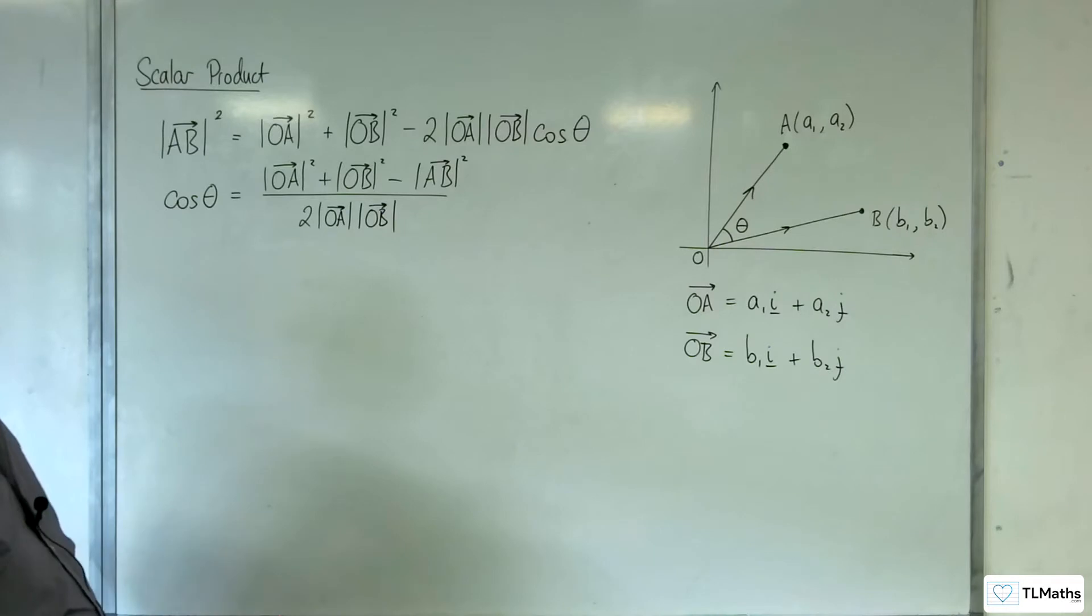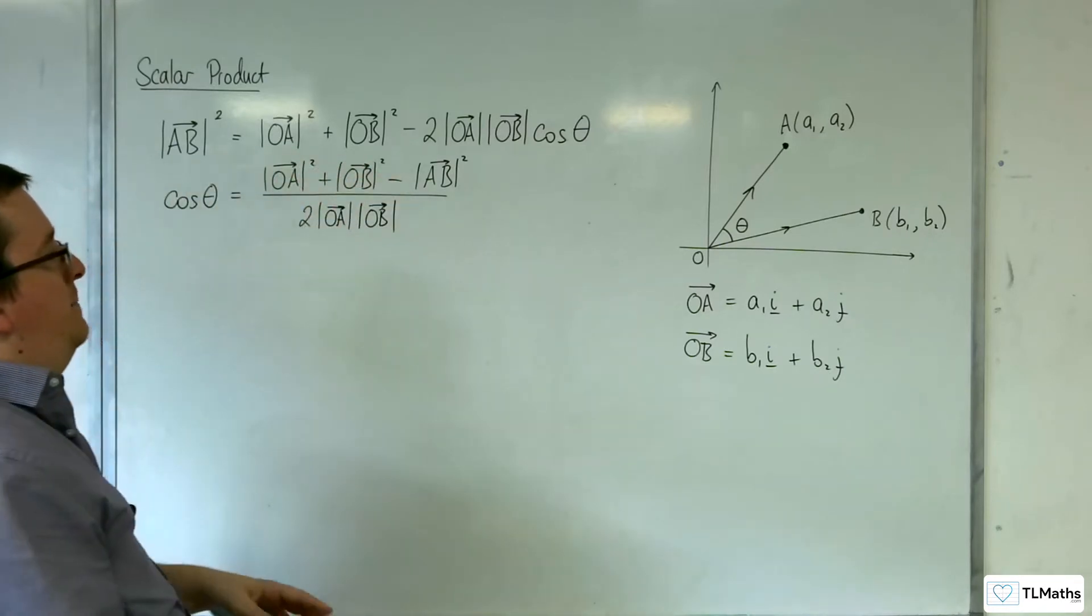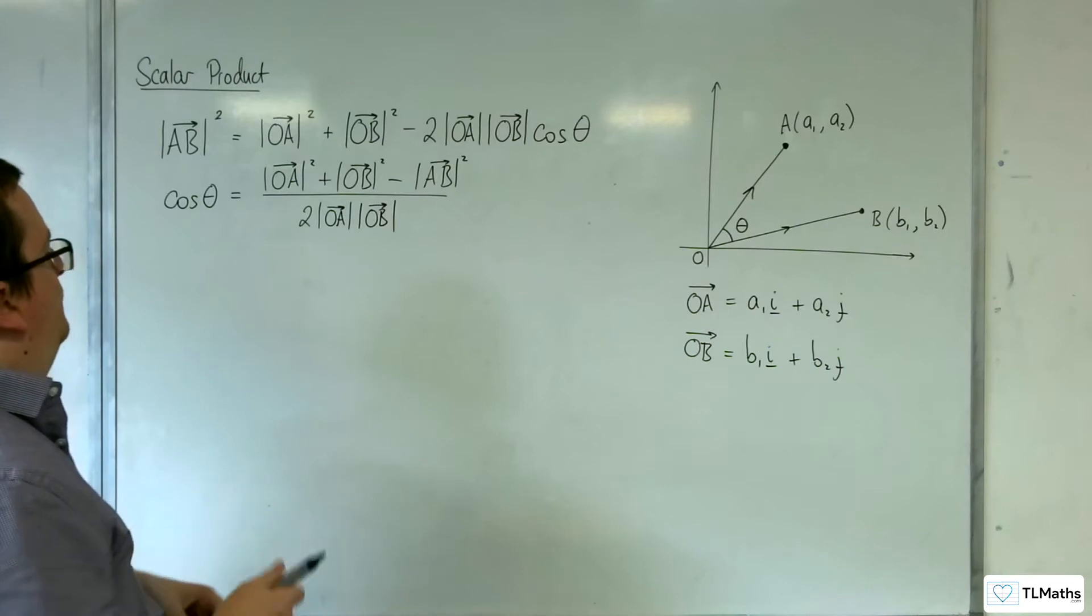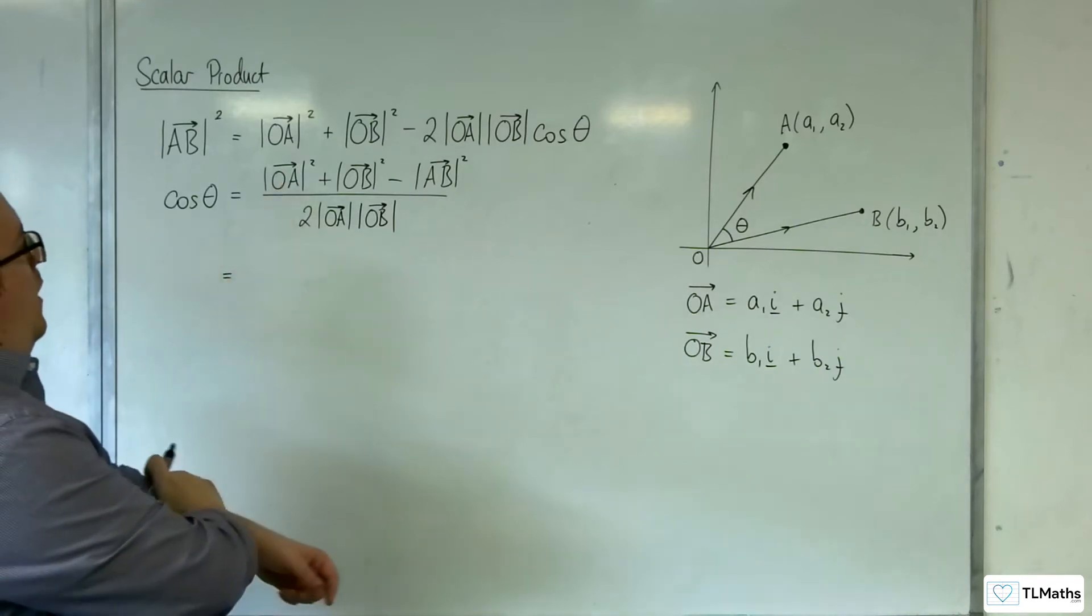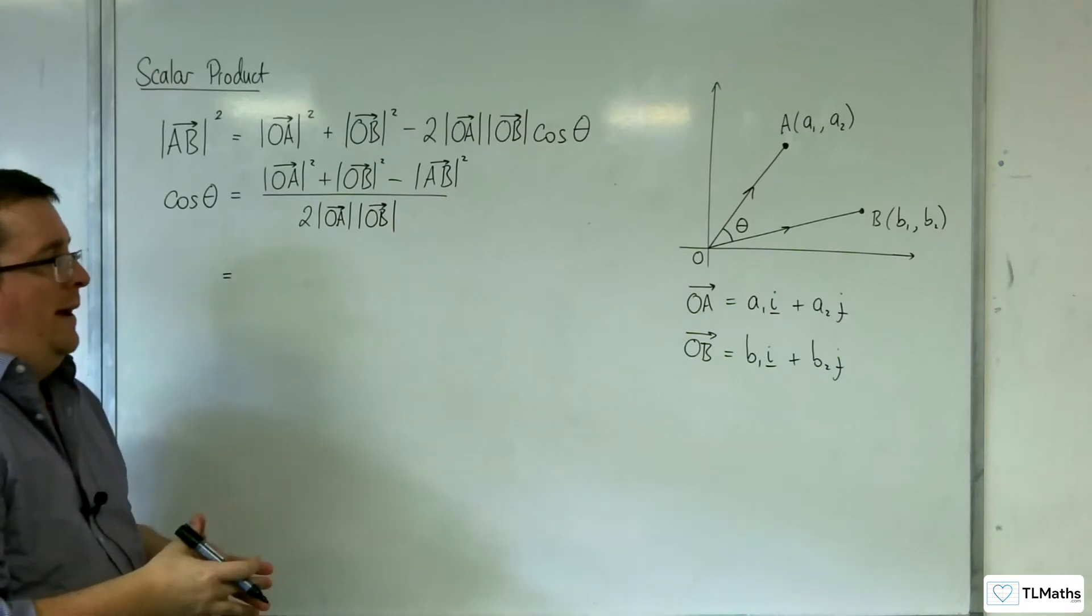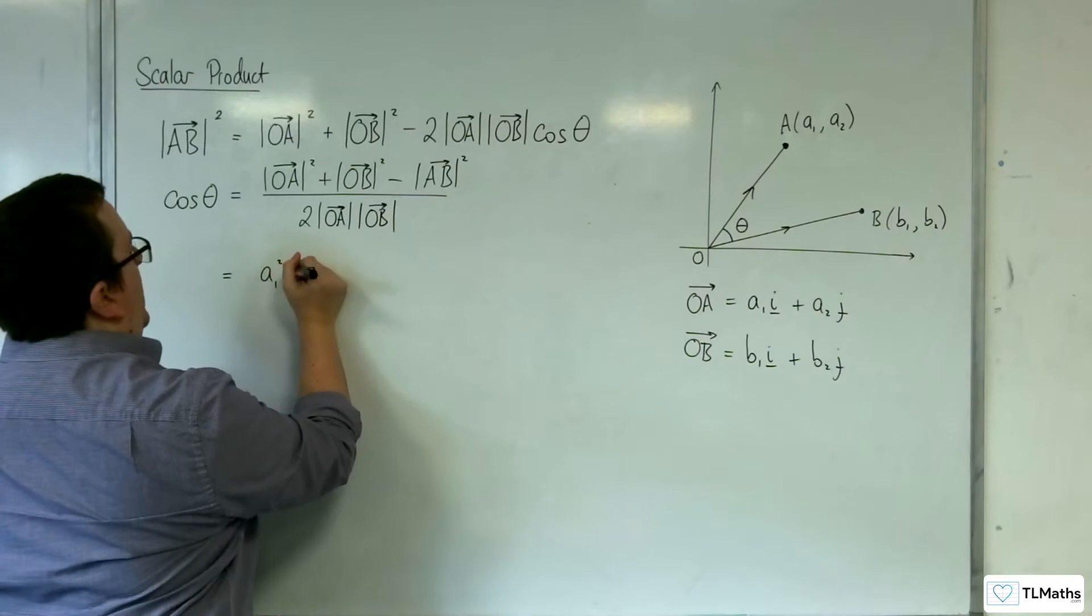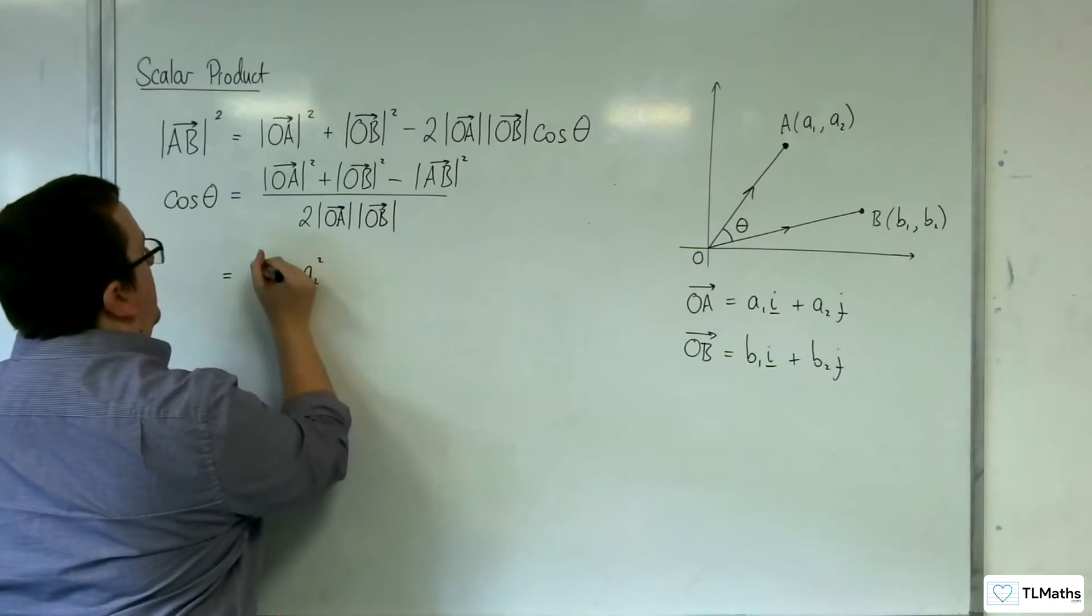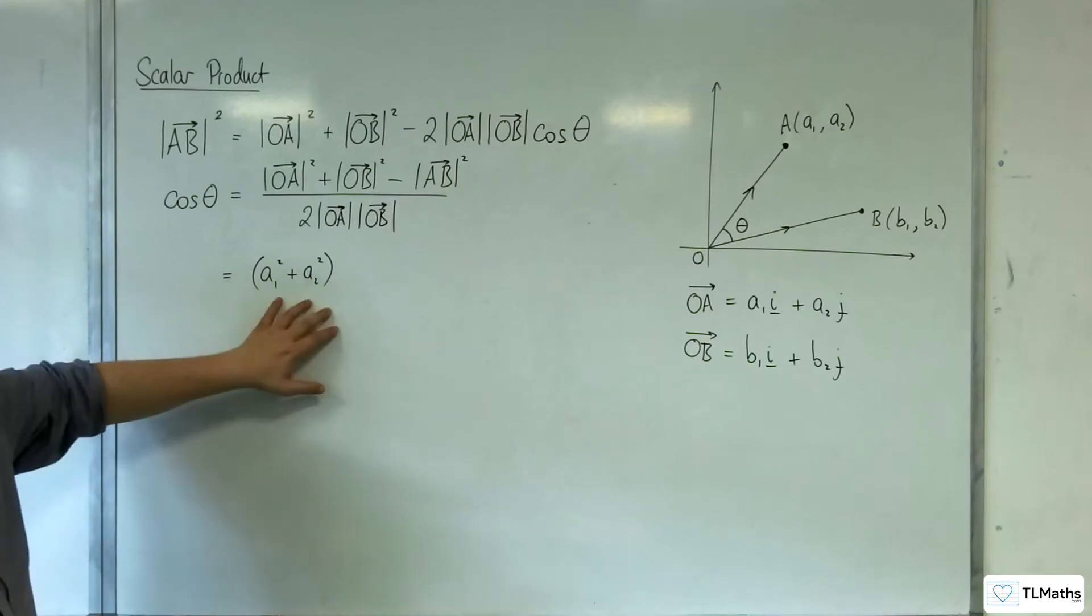So we're going to use that to now substitute into the cosine rule, as we developed from the last video. So the first thing is we've got OA, the length of that, all squared. So that would be A1 squared plus A2 squared, square rooted and then squared, so it would just be that.